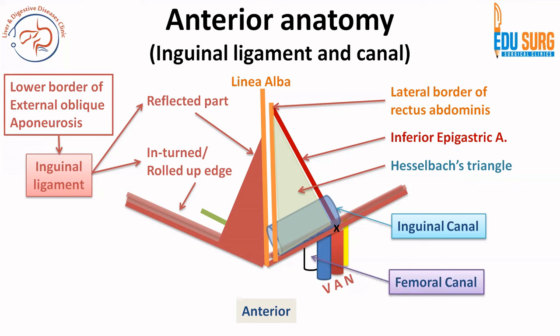This is how the infra-inguinal area looks. I used to remember it as VAN — when you have both sides it is NAVVAN — and you can remember the structures easily that way. The mid-inguinal point is where the femoral artery will be located, which is again an important landmark: nerve, artery, vein in that area, and the medial structure is the femoral canal.